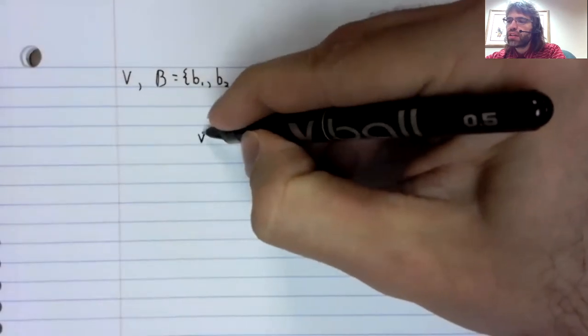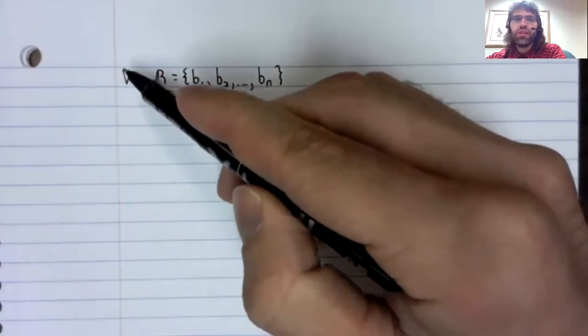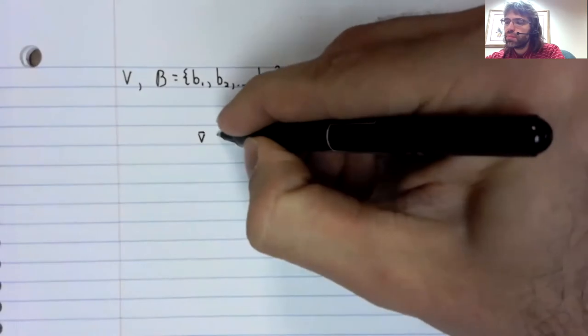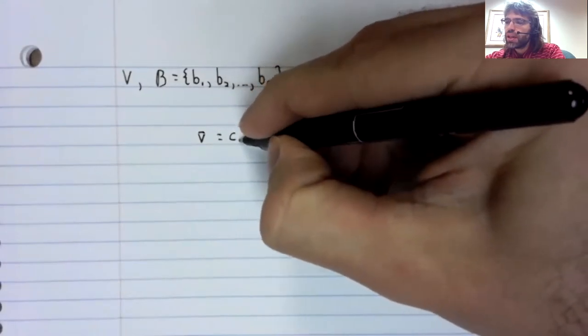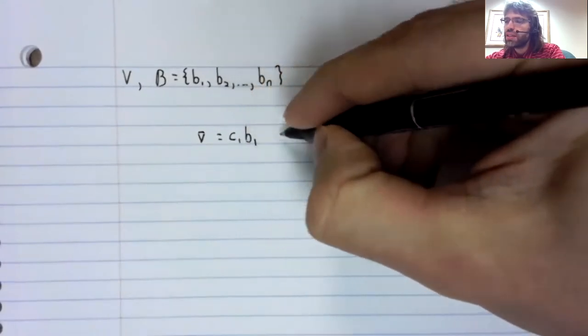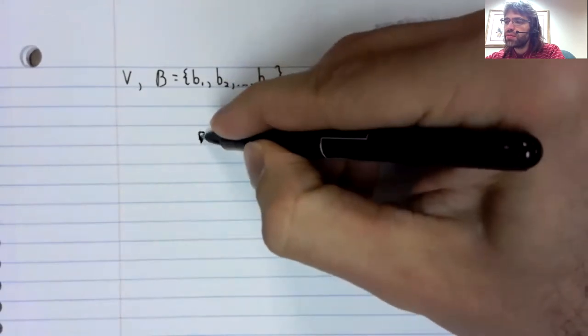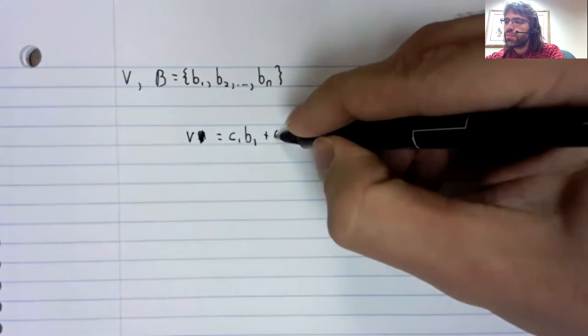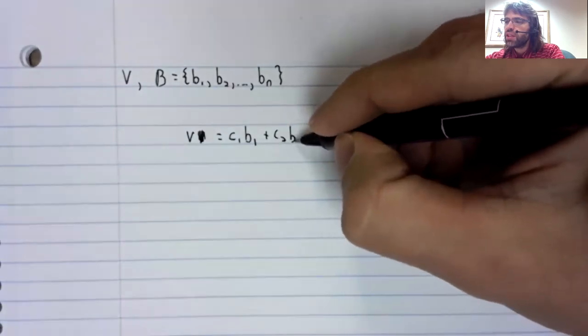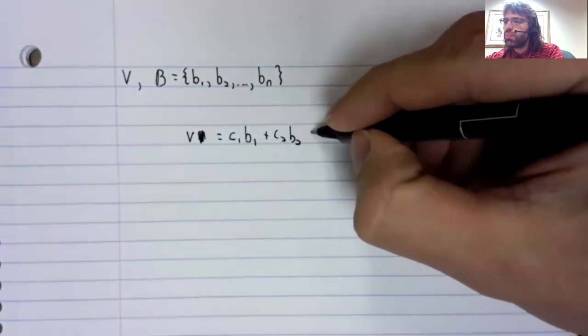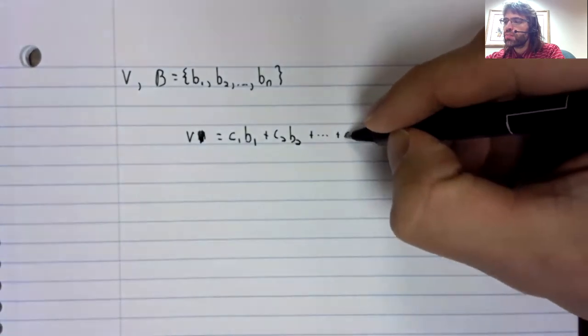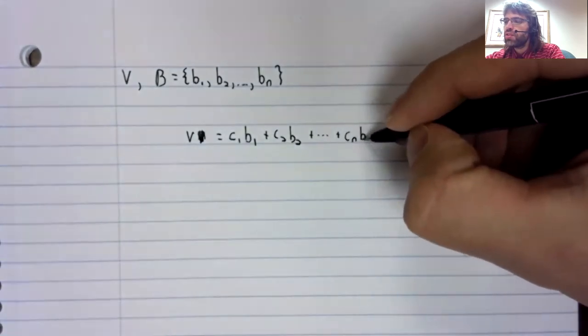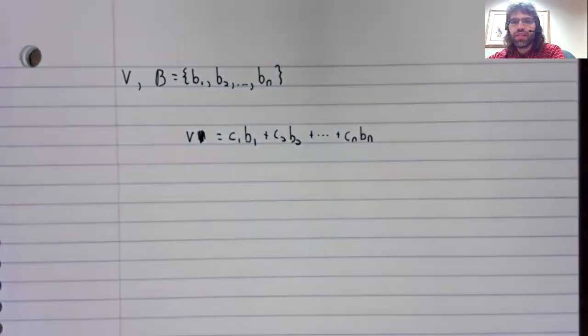Then any vector in V can be uniquely written as a linear combination of these basis vectors.